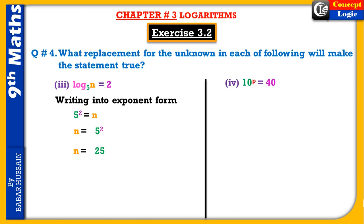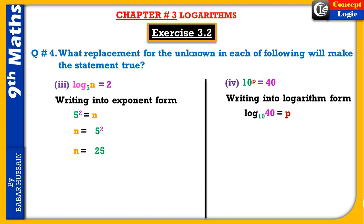Fourth part: 10^p = 40 — اس میں p کی value find کرنی ہے۔ Log form میں لکھیں گے: log base 10 of 40 = p۔ log(40) calculator سے find کریں — one point six zero two one (1.6021)۔ تو p = 1.6021 ہمارا answer ہے۔